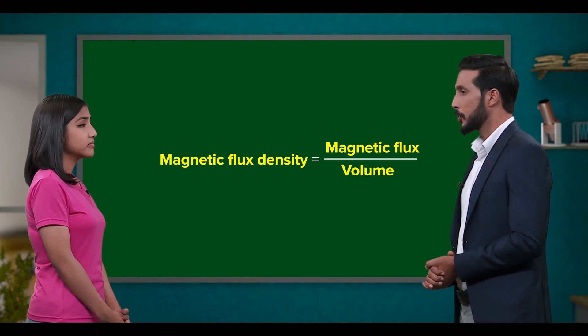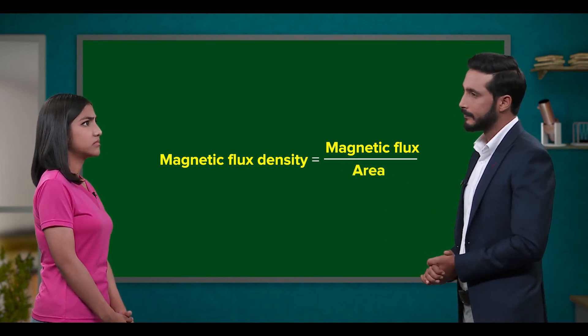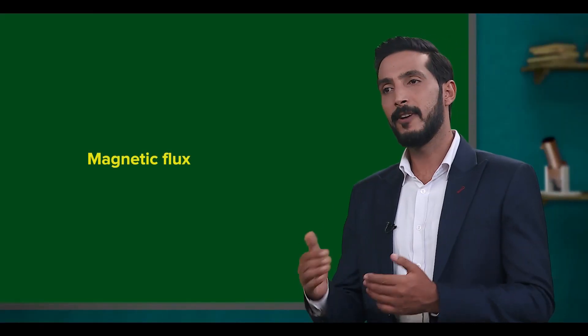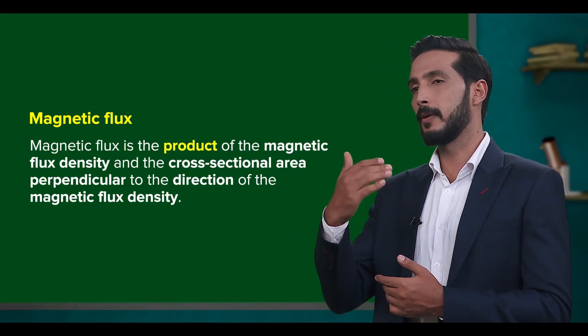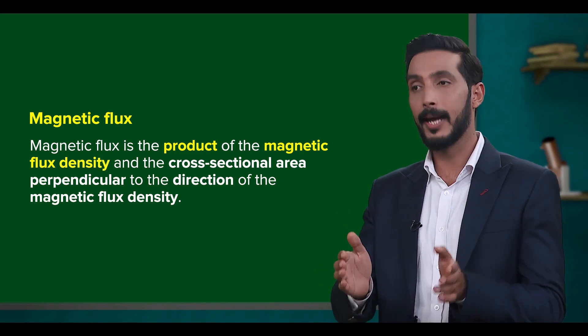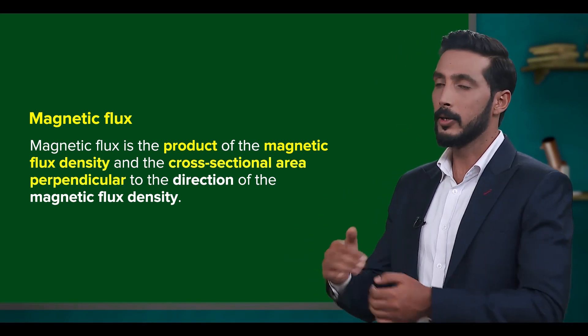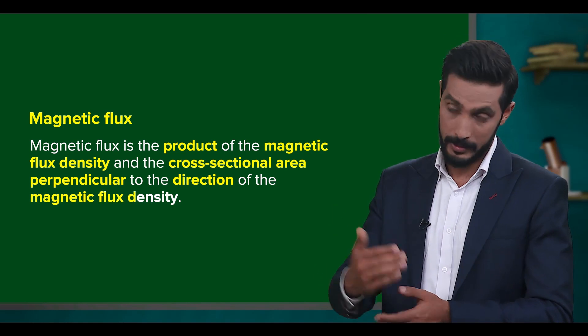But on the contrary, it's related to area, not volume. The area? Yes. We define magnetic flux as the product of the magnetic flux density and the cross-sectional area perpendicular to the direction of the magnetic flux density.